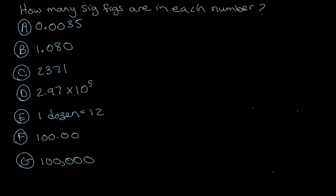How many sig figs are in each number? For A, we look at 0.0035. We know that non-zero numbers are always significant, so those digits are significant. But these zeros here are leading zeros — they come to the left of the first non-zero number, so they are not significant. So we have two sig figs in this case.